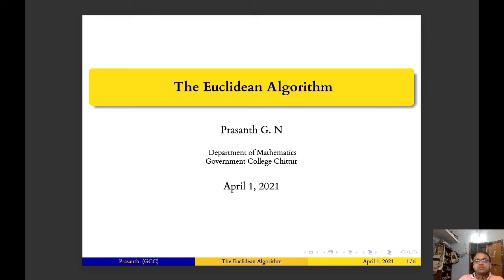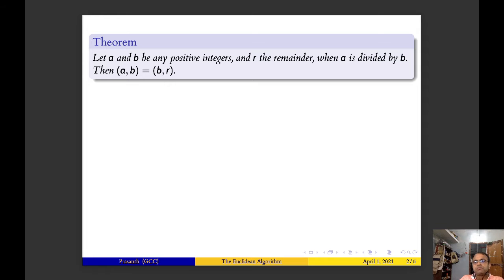Okay my dear students, today we will discuss a little bit about the Euclidean algorithm. I hope you remember what we studied last day. We have a theorem: assume that a and b are two positive integers and r be the remainder when a is divided by b. Then the gcd of a,b is same as gcd of b,r. In this case we have assumed that a is greater than b.